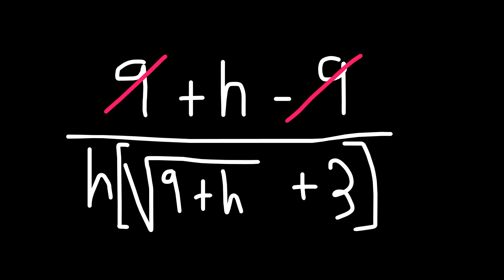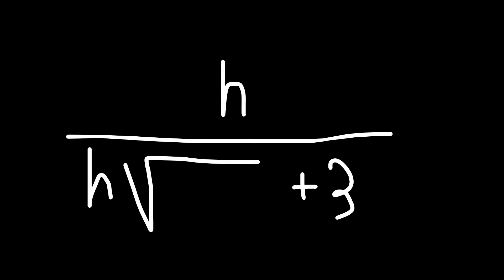Notice that the 9 and the 9 will cancel off, leaving only an h in the top. So we're going to have h over h times the root of 9 plus h plus 3.